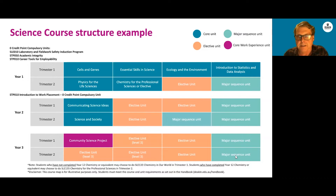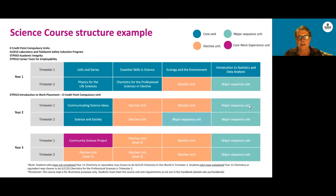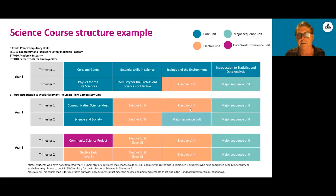The major sequence units are shown in aqua. Most major sequences are exclusively second and third year units, so you have first year to really decide what specialisation you want to take. You get to do all these different subjects and make a decision about which direction you'd like to specialise in. Even if you want to do a major with a first year unit that you didn't do during first year, you can usually pick that up in second year, particularly within the single degree, as there are a lot of elective spaces — there's a lot of flexibility within the degree.